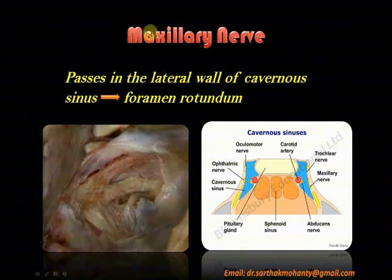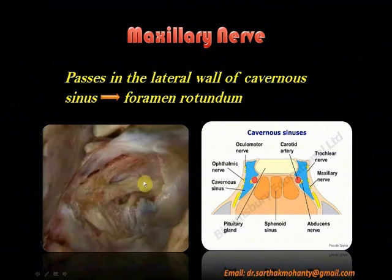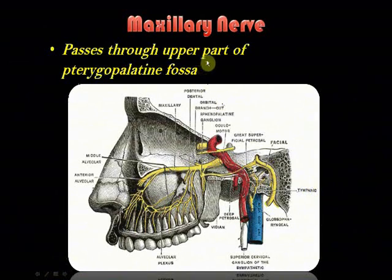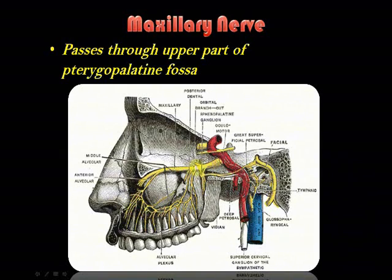The second division is the maxillary nerve. It passes in the lateral wall of the cavernous sinus — alongside oculomotor, trochlear, ophthalmic, and maxillary nerves — and enters through the foramen rotundum. It then passes through the upper part of the pterygopalatine fossa, as seen in this diagram where the maxillary nerve enters through the foramen rotundum into the upper part of the pterygopalatine fossa.